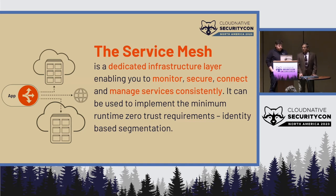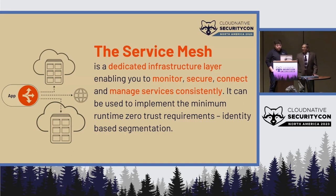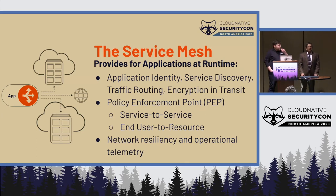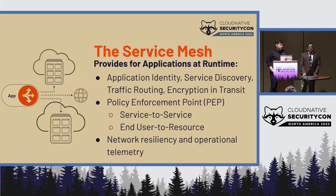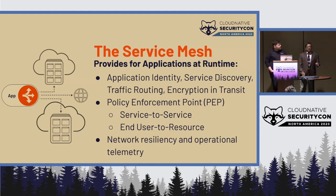A background on service mesh: the service mesh really is meant to accomplish three primary things. One, as an infrastructure layer, it provides identity to applications — which is the key. Two, it handles all traffic routing: service discovery, intelligent routing, and resilience measures like retries and blue-green deployments. Three, and most important, it enforces service-to-service authorization as well as end-user-to-resource authorization. That's where all our focus on policies comes into the picture.